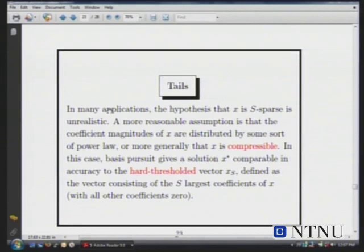Saying that your signal is sparse is not completely realistic. In applications, your signal is not exactly zero outside a small set. It has s large coefficients and then a tail of much smaller coefficients. So your signal is not actually sparse. It's what's called compressible, where you can throw away this tail and get a sparse object which is close to your original solution but not equal to it.